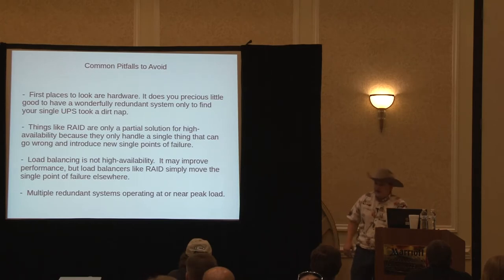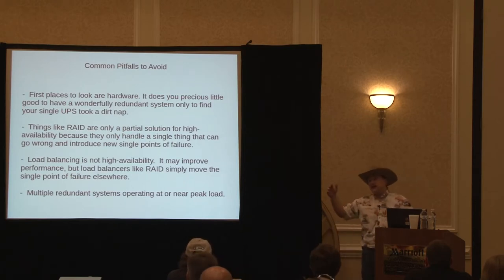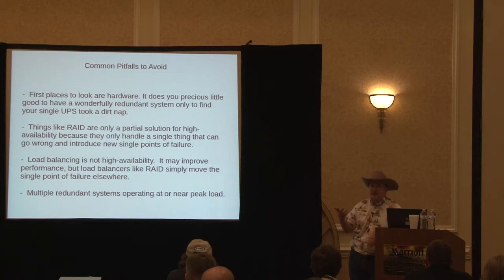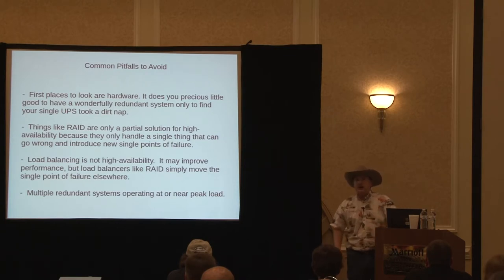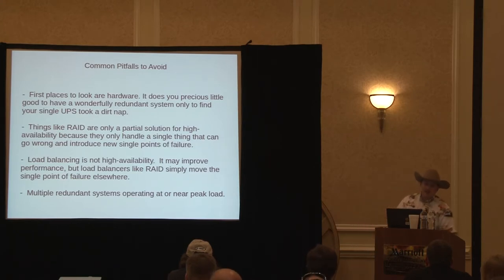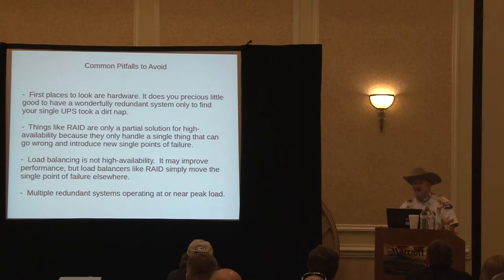Even with two different systems, if that power line fails, you're dead. You can take this very far — having a secondary HA system in another data center in another part of the country so that if you have a massive blackout, you can fail over automatically to a second data center. Things like RAID are only a partial solution — basically Band-Aids — whereas HA is a full solution if it's well implemented.